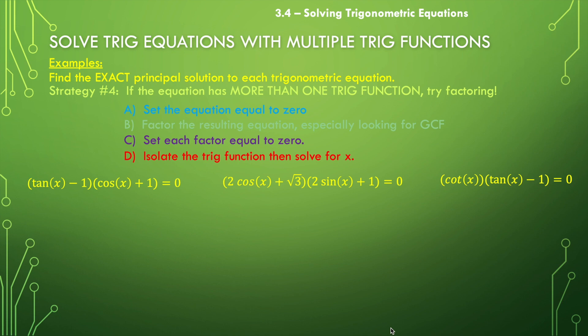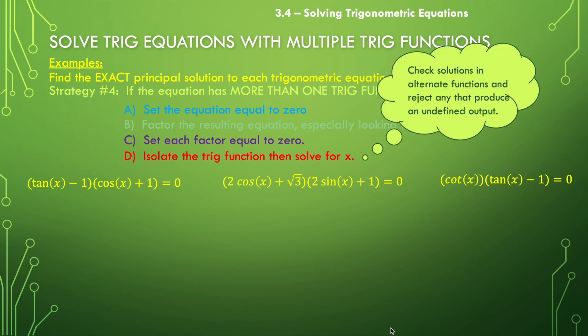Since we are dealing with more than one trig function, it's possible that a solution generated by one trig function will become problematic in the other. We need to check our solutions in the alternate functions and reject anything that produces an undefined output. Anytime you have a tangent, cotangent, secant, or cosecant, definitely check values from the alternate function to make sure you're not getting something undefined.